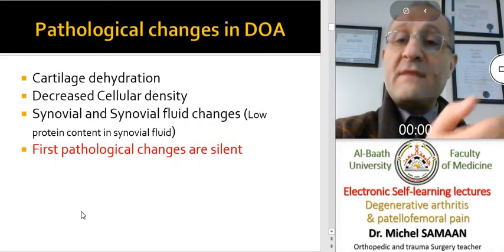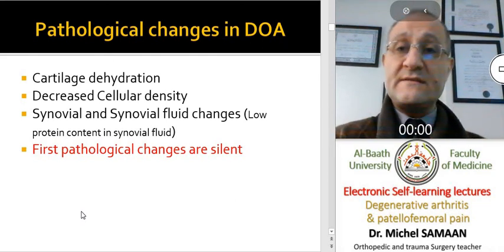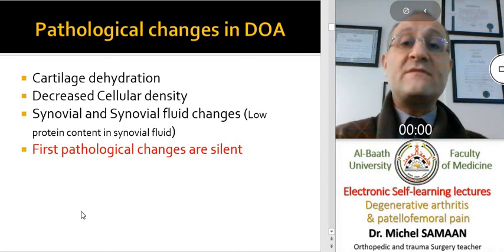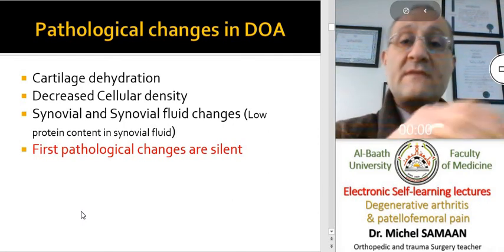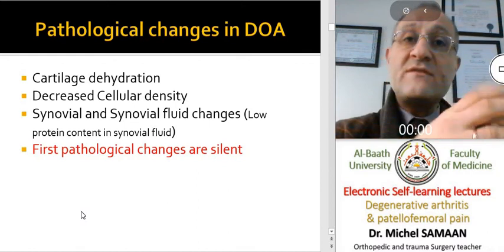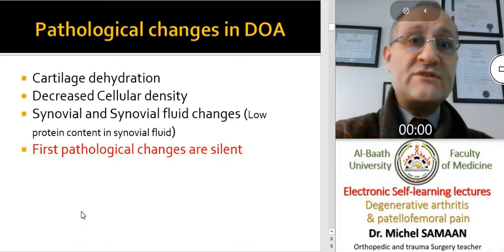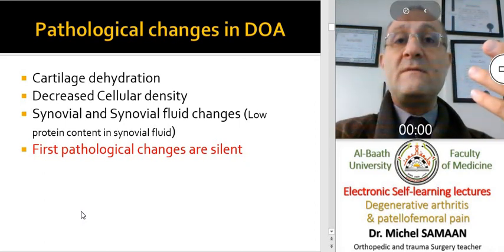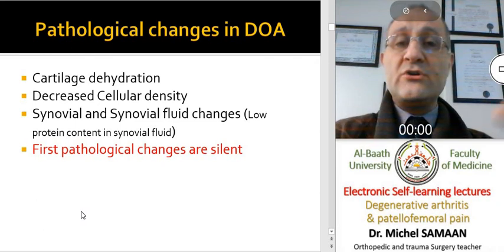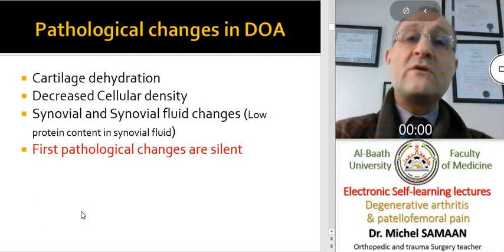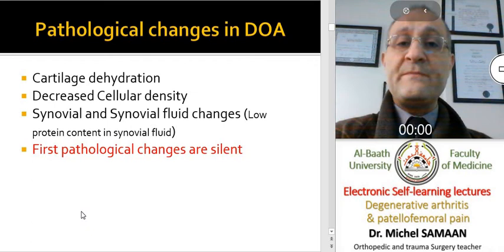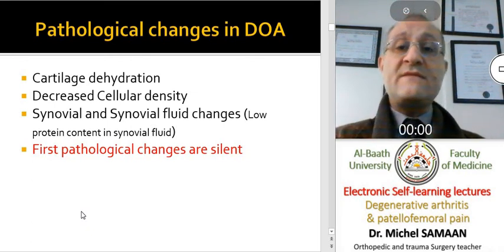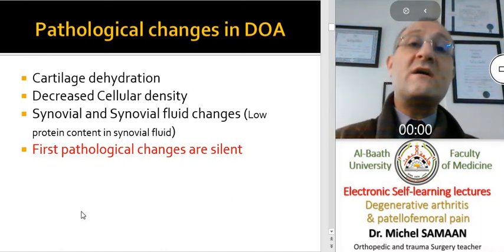There are many pathological changes in degenerative osteoarthritis. First of all, we have cartilage dehydration, a decrease of cellular density, synovial inflammation, and changes in synovial fluid. The synovial fluid has a low concentration of nutrients and low protein content. The first pathological changes are usually silent.